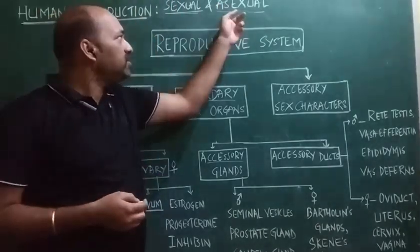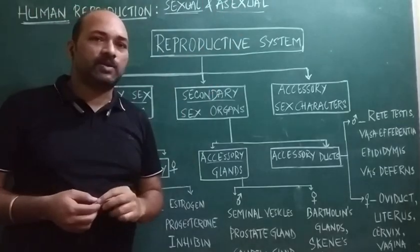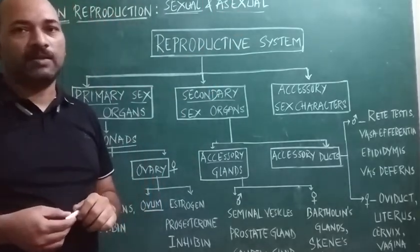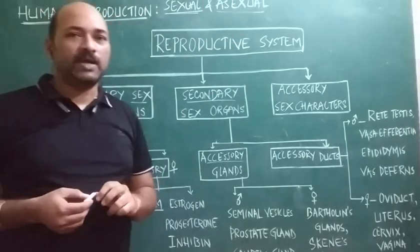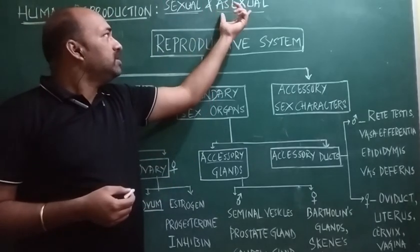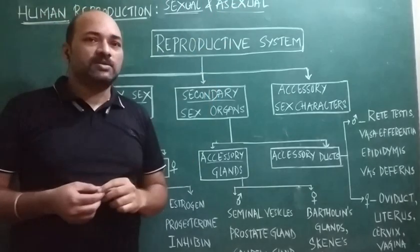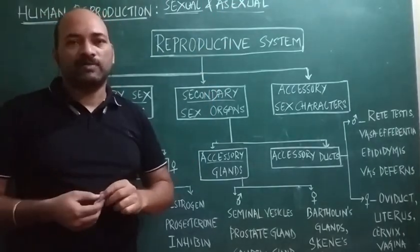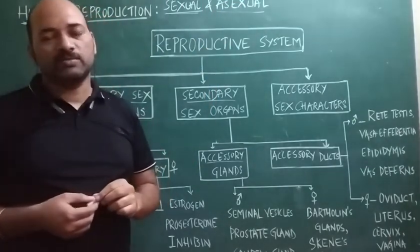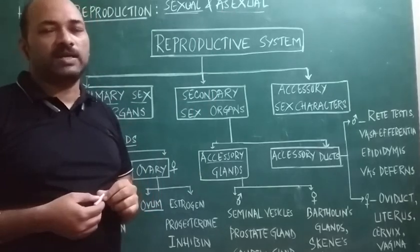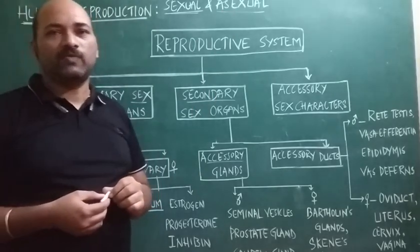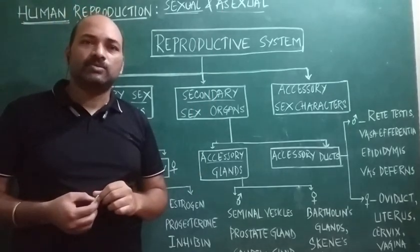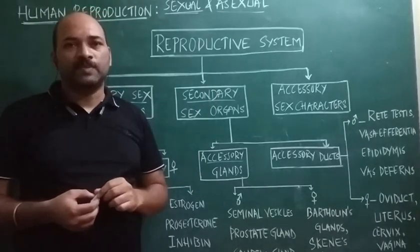In the case of asexual reproduction, as it is uniparental where a single parent is involved, asexual reproduction results in the formation of new individuals which are genetically and morphologically identical to each other — so they are said to be clones.